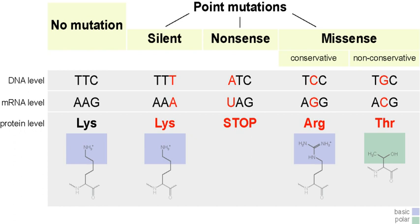Silent mutations code for the same amino acid — a synonymous substitution — and do not affect the functioning of the protein. A single nucleotide can change, but the new codon specifies the same amino acid, resulting in an unmutated protein. This is called a synonymous change. It is possible because 64 codons specify only 20 amino acids. Different codons can lead to differential protein expression levels, however.